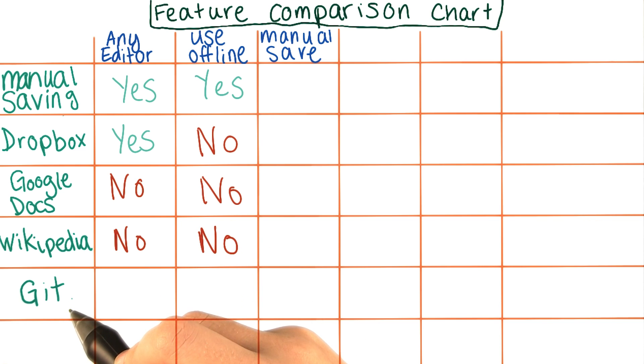It was created in 2005 by Linus Torvalds. Git is British slang for something roughly equivalent to unpleasant person. Torvalds once said, 'I'm an egotistical bastard and I name all my projects after myself. First Linux, now Git.'